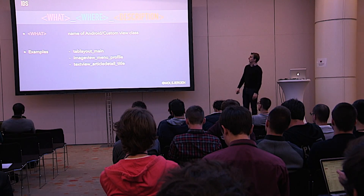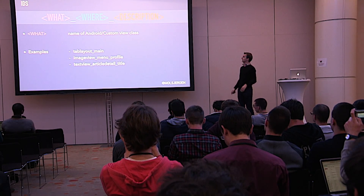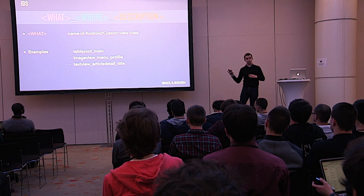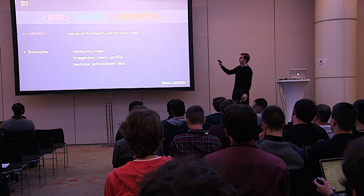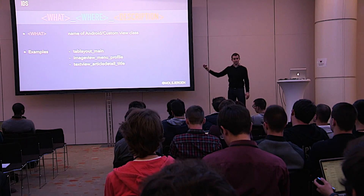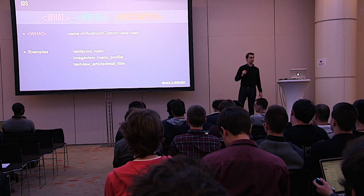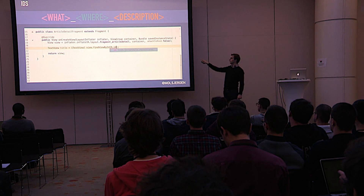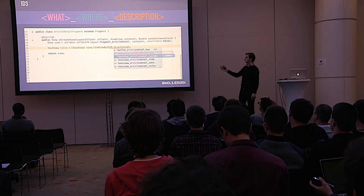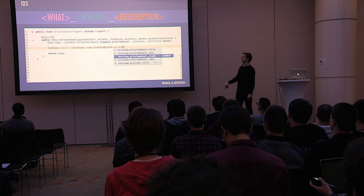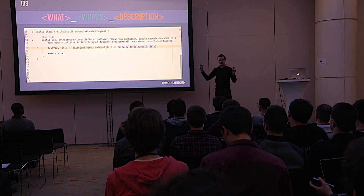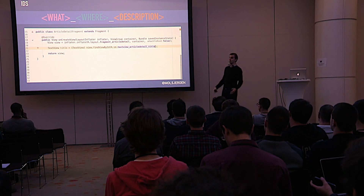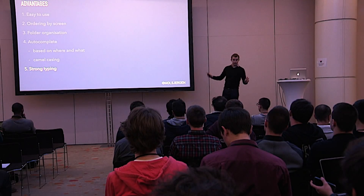For IDs, it's the same story — already clear that it's very simple. For IDs we need three items. The 'what' is going to be the name of the Android view class or the custom view class — for instance, a TabLayout, an ImageView, or a TextView. It's the name of the item you're going to cast it to in your source code when you do a findViewById. The nice thing is this is kind of type safe — the ID name already says what the element is going to be, so that's one less place where you could make a mistake. You have a kind of strong typing here.